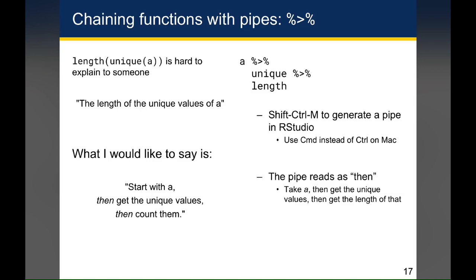So if you're looking at A pipe unique pipe length and wondering what the heck is that, just replace the word pipe with the word then. And if you do that, the way you'll read this code on the top right is, take A, then get the unique values, then get the length of that. And that's actually easier to explain than it is to say that you want the length of the unique values of A.